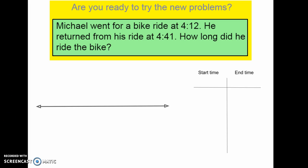We'll take a look at one more for some extra practice. So our problem, remember we're looking for our start time, our elapsed time, and our end time. So let's see out of those three things what this problem provides for us. Michael went for a bike ride at 4:12, he returned from his ride at 4:41. The word return just means he got back, he finished, he was done. How long did it take, did he take to ride the bike?